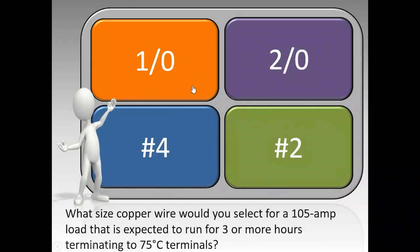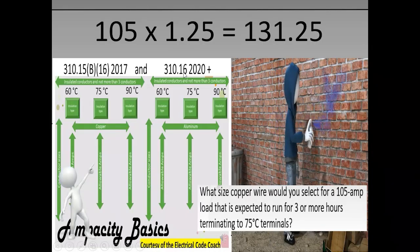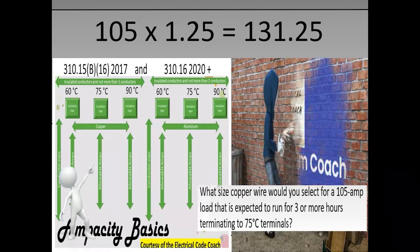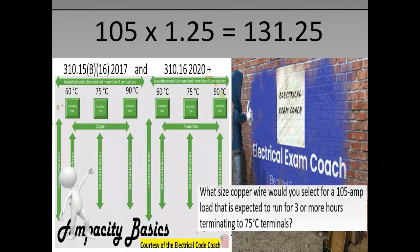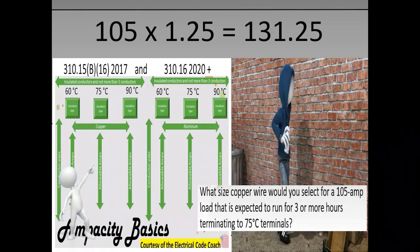The correct answer is 1/0. For this one, we're going to take our starting ampacity and multiply it by 125%. That's going to give us a new known load of 131.25.